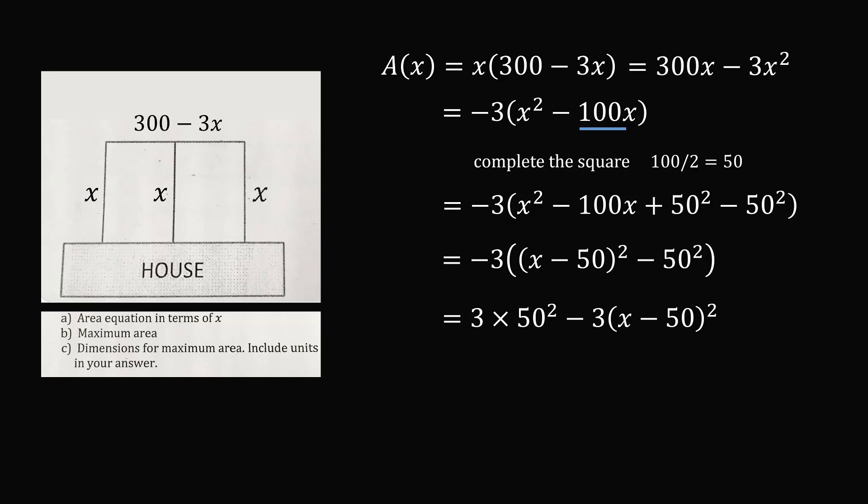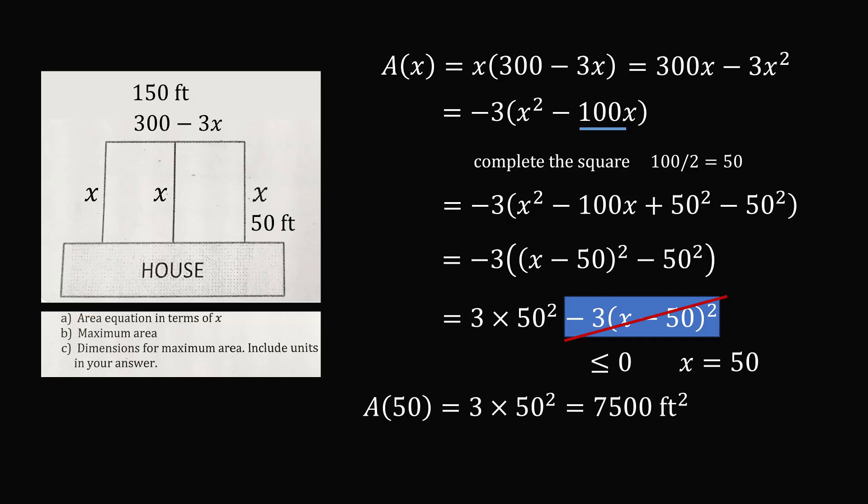Then we subtract out 3 times the square of (x minus 50). How can we maximize this value? We know the square of any real number will be a non-negative term. So we are subtracting a non-negative term. So whatever we're removing, this is going to be a negative quantity here. We can get the maximum area by subtracting out 0. So the way we can eliminate this term altogether is by setting x is equal to 50, and this term will vanish. That will give us the maximum area is 3 times 50 squared, which equals 7,500 square feet. We know that x is equal to 50 is one dimension. The other dimension is 300 minus 3x, and that will be equal to 150 feet. And that's another way to solve the problem.